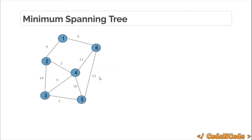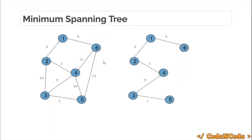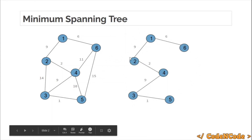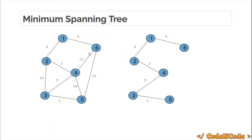So for a recap: you have a weighted graph where each edge has a certain weight associated with it. You have to find a tree such that the graph is still connected, it contains all the vertices, and after removing some edges the new formed graph must be a tree with minimum sum of edge weights. This is the MST of this graph with a sum of edges around 27.